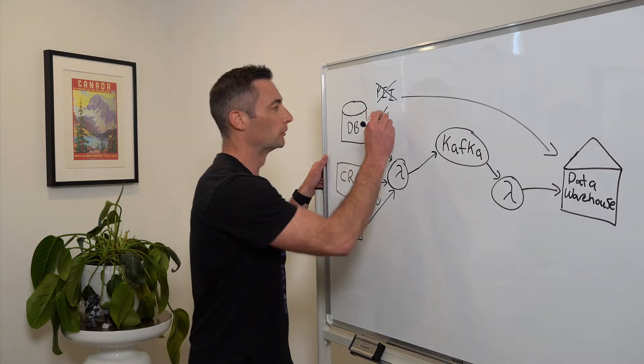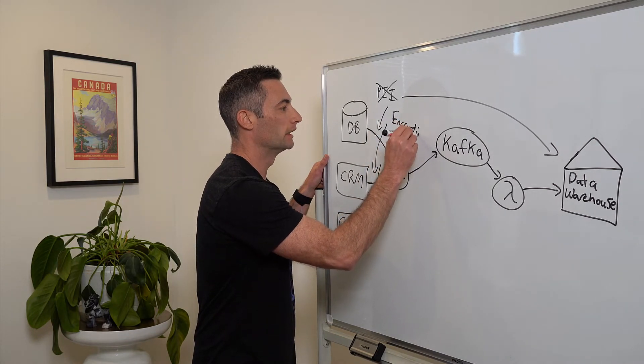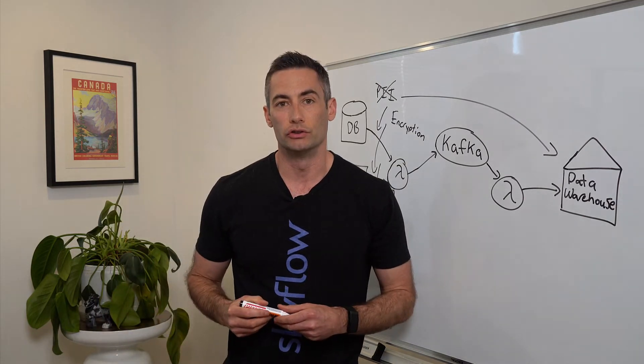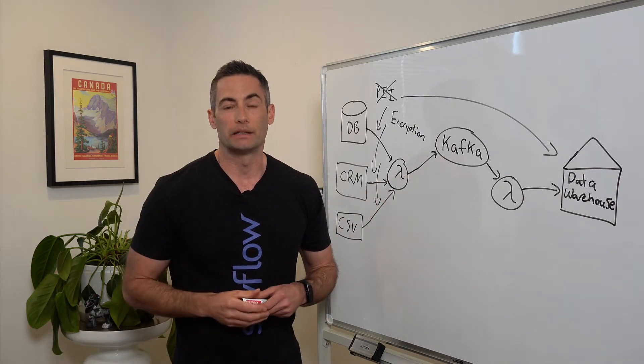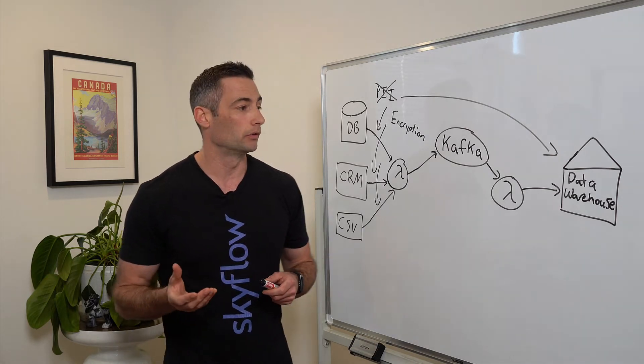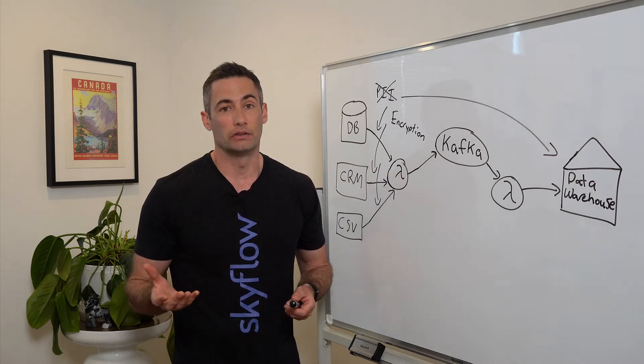But we still want to protect it. We could add some sort of encryption layer here to make sure that the data isn't stored in plain text. But that causes additional issues where the data warehouse is probably expecting the data being in certain formats. Maybe an email looks like an email. A phone number looks like a phone number. And now we're replacing it with random bits. That might break the existing schema.